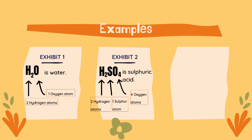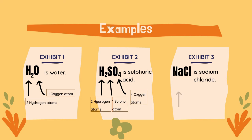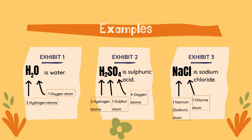The last example is NaCl, which is sodium chloride. Sodium chloride is made up of Na, which is the symbol for natrium — or as we usually call it, sodium — and Cl, the symbol for chlorine. Hence, sodium chloride has one sodium atom and one chlorine atom.